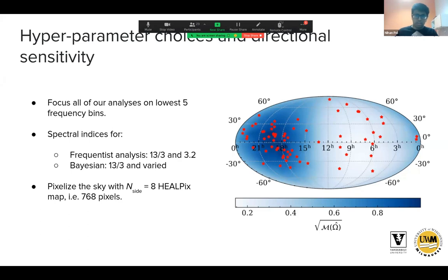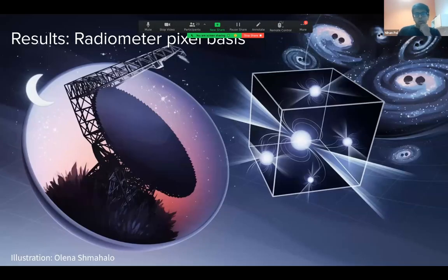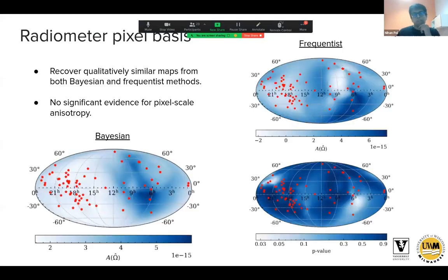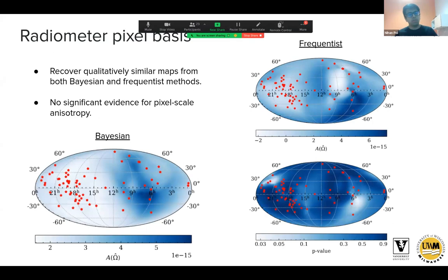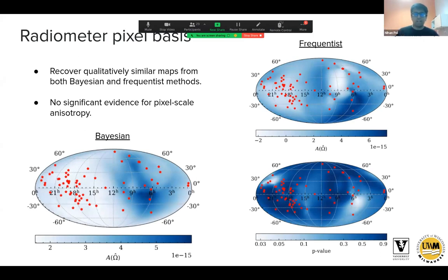Looking at the radiometer pixel basis results: the Bayesian PTA pipeline and frequentist analyses show broad similarities in the recovered amplitude maps. The frequentist p-value map shows no significantly anomalous pixels. Overall, we find no significant evidence for anisotropy in this dataset, implying the current data is best described by an isotropic model for the gravitational wave background.